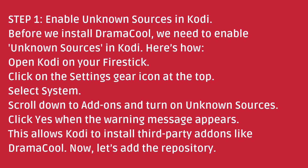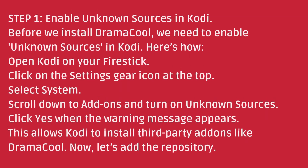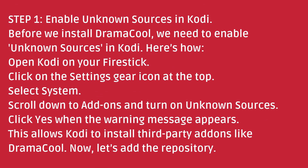Step 1: Enable Unknown Sources in Kodi. Before we install Dramacool, we need to enable unknown sources in Kodi. Here's how: Open Kodi on your Fire Stick. Click on the Settings gear icon at the top. Select System. Scroll down to Add-ons and turn on Unknown Sources. Click Yes when the warning message appears. This allows Kodi to install third-party addons like Dramacool.